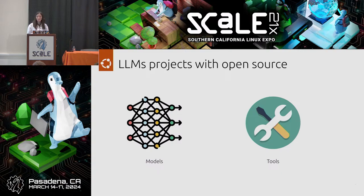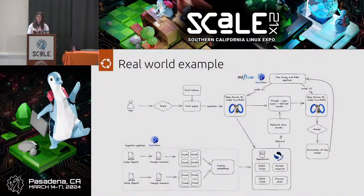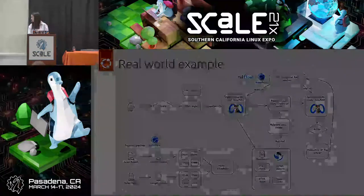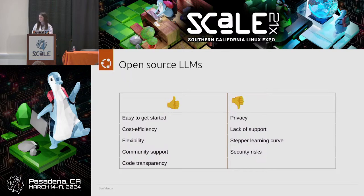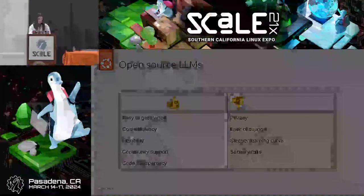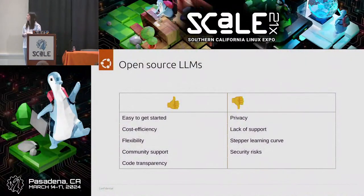LLM projects can be done with open source — everything I've shown here is open source, and I've done it on my own without spending much. On one hand, you have open source models — those familiar with the ML world probably know Hugging Face, where you'll find a lot of models. There are also open source tools to build your own models or fine-tune existing ones. Open source large language models — Llama 2, Mistral, Falcon — are the most used ones.